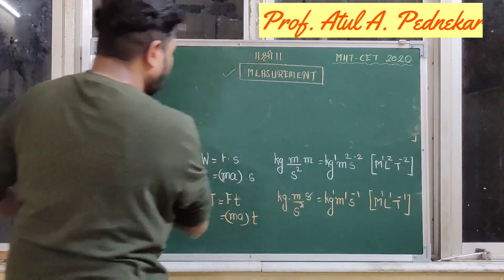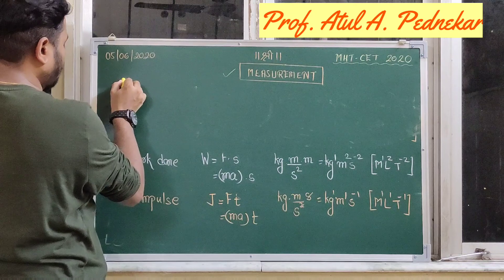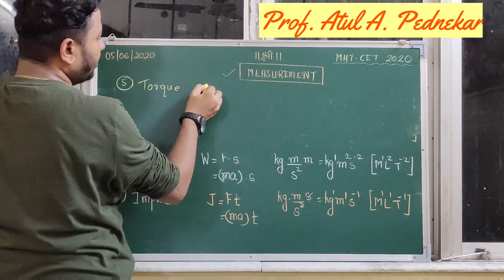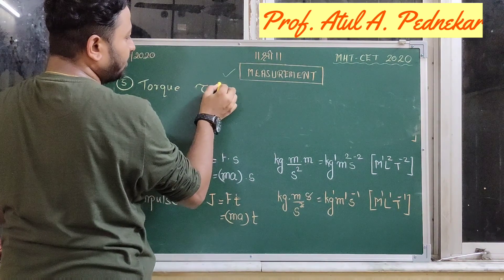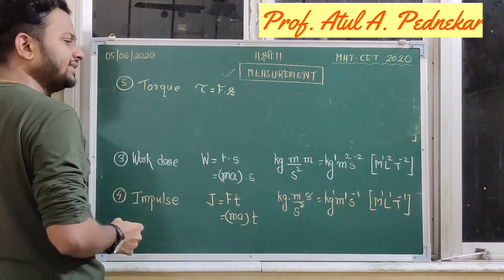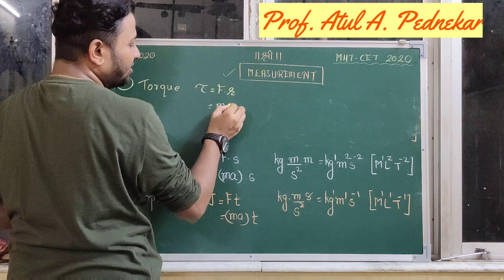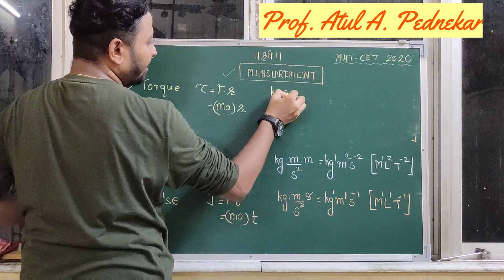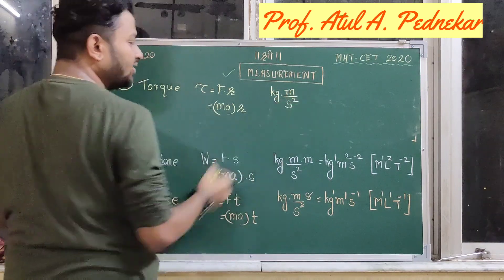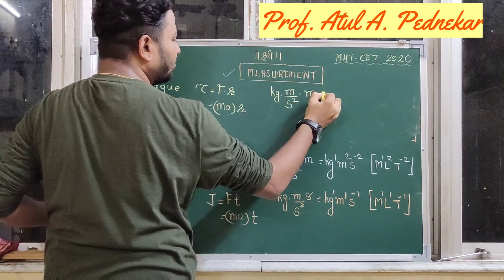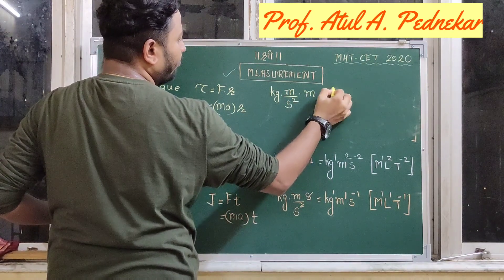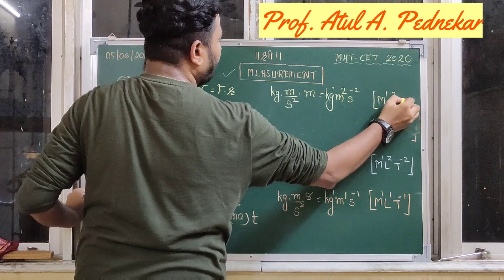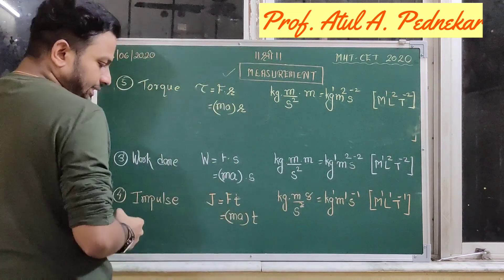The fifth physical quantity is torque, denoted by the symbol tau. Torque is basically force into the perpendicular distance — that is mass into acceleration into distance. The unit for mass is kg, acceleration is meter per second square, and distance is measured in meters. The dimensions are M1, L2, and T to the power of minus 2.